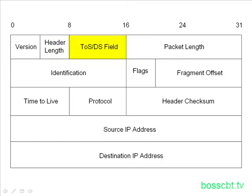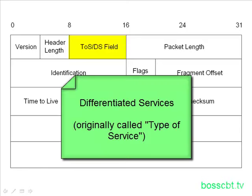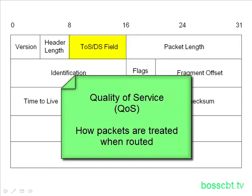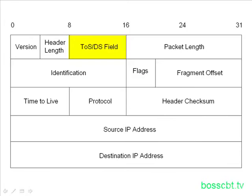The next field is the differentiated services field, the DS field — also known as the TOS field, which stands for type of service. Type of service was the original name, and its use has evolved into differentiated services. This field is related to quality of service, QoS. That relates to treating some packets with more care than others — for instance, voice over IP or streaming video may need better treatment than random internet traffic. This field gives us options to differentiate how we treat certain types of traffic.